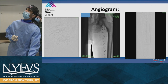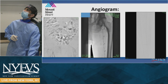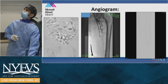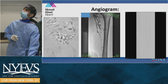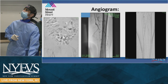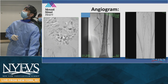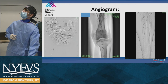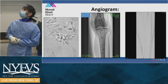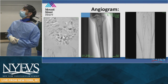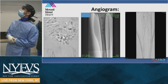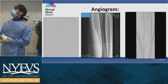This is the aortography. You can see the iliacs are severely diseased on the right, with some disease on the left as well. There is a runoff CTO in the SFA at mid with reconstitution distally. His runoff is about two-vessel runoff with a CTO in the anterior tibial.